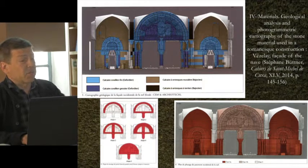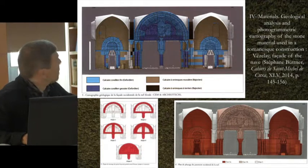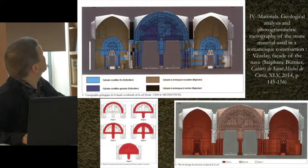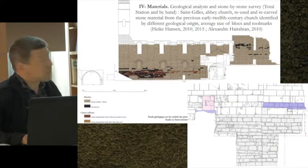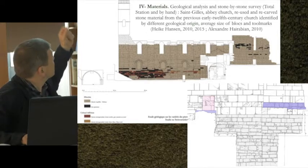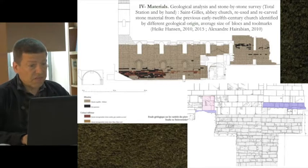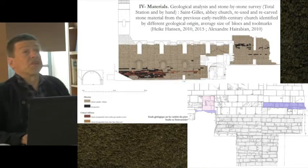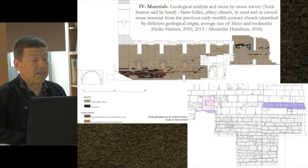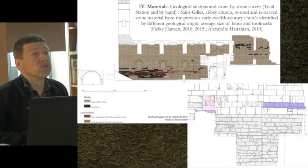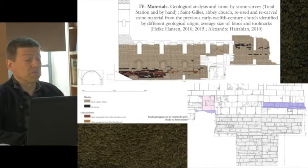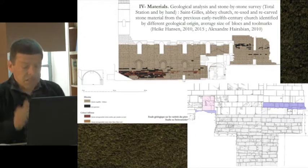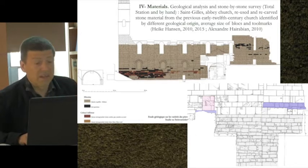The west door of Chartres Cathedral — somewhere between late Romanesque and early Gothic — and the study done by the Centre d'études médiévales of Vézelay, which is just now undergoing a fantastic restoration: this kind of colored stratigraphy and cartography shows the use of certain materials for the sculptured parts. In our study of Saint-Gilles, a total-station stone-by-stone survey and hand drawing, still done by Heike Hansen, showed that geological analysis was very important to prove that the beginning of the church was built with reused stone from a previous building, also found in the foundations of the same wall.